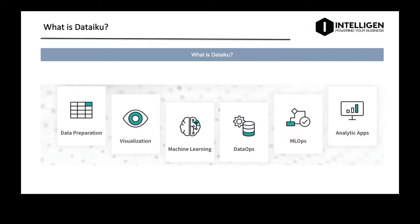DataIQ positions itself as one central single solution for the design, deployment and management of AI applications. That means you can connect, cleanse and prepare data for analytics and machine learning projects at scale. You can also explore and create statistical analysis charts and dashboards, and you can build advanced machine learning models using the latest techniques by dragging and dropping things into the recipes within DataIQ — including feature engineering and automating the model training process itself.